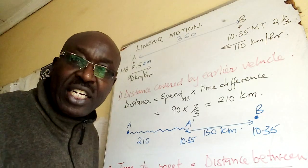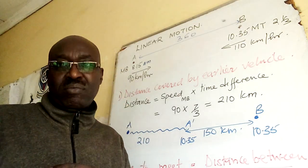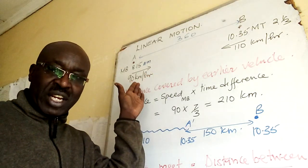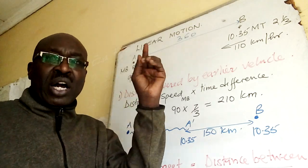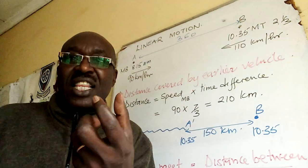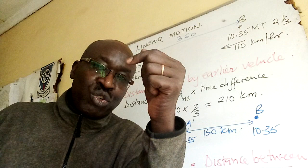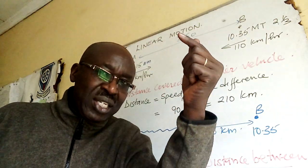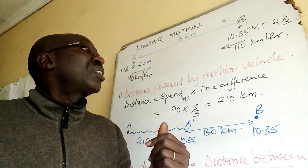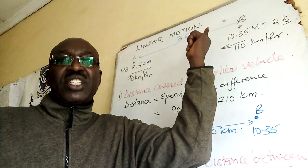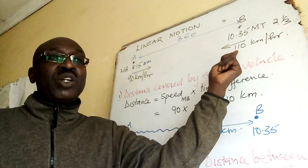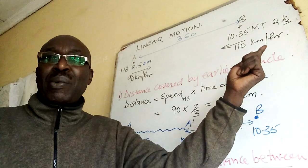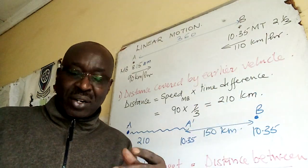And it is traveling towards B at a speed of 90 kilometers per hour. So this is the diagram. We are told two and a third hours later, a matatu leaves town B towards A at a speed of 110 kilometers per hour.